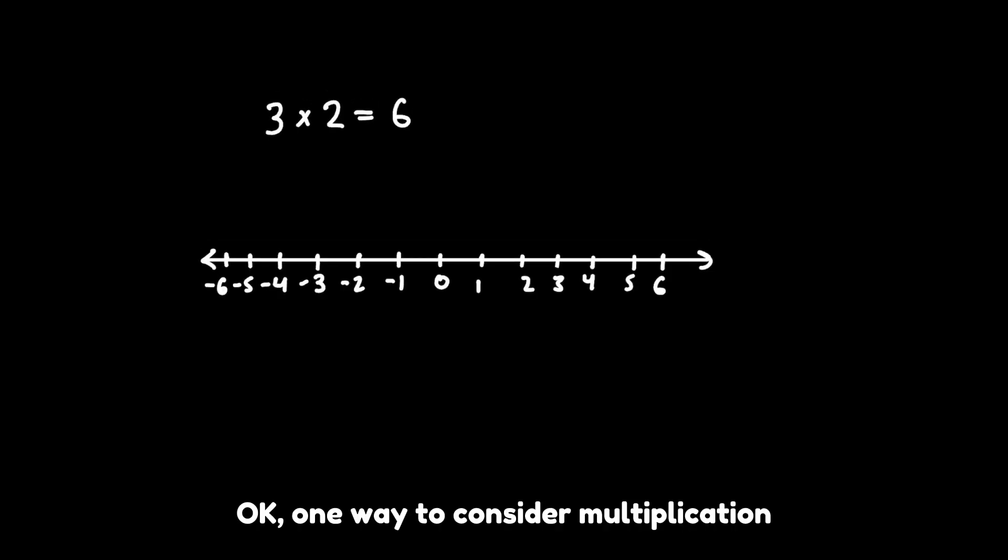Okay, one way to consider multiplication is repeated addition. So 3 times 2 is the same as two groups of 3, or the same as three groups of 2.